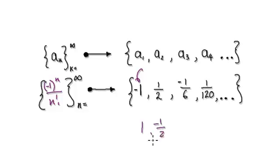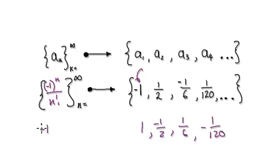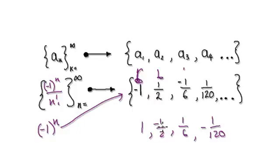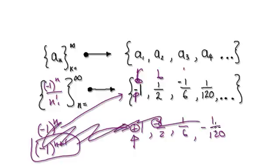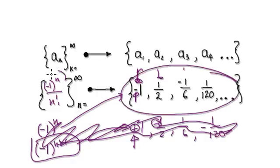Now suppose instead you have a positive first term, then negative, and so on — for example starting with positive and then -1/2. If you have a positive start but (-1)^n gives negative first, you can instead use (-1)^(n+1). That shifts the pattern so it starts positive, then negative, and so on.